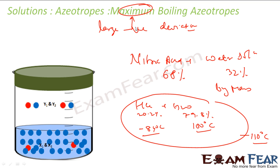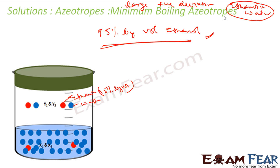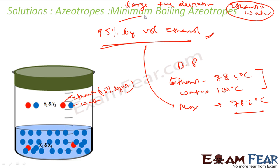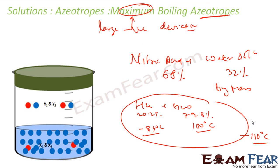Azeotropes will have a fixed boiling point. For maximum boiling azeotropes, the mixture boils at a higher temperature than either pure component. For minimum boiling azeotropes — for example, 95% ethanol — ethanol has a boiling point of 78.4°C and water boils at 100°C, but the mixture boils at 78.2°C, which is lower than both. In maximum boiling azeotropes, the boiling point of the mixture is higher than the boiling points of both respective components.